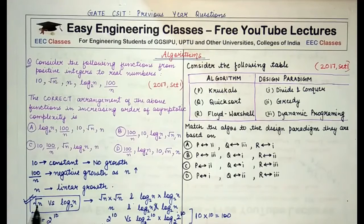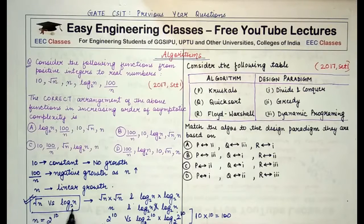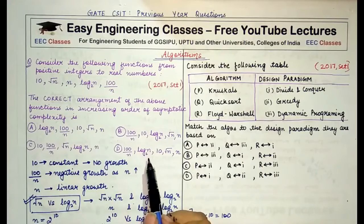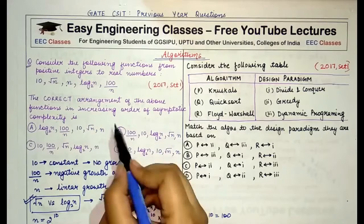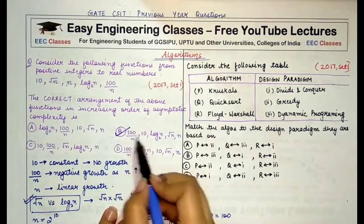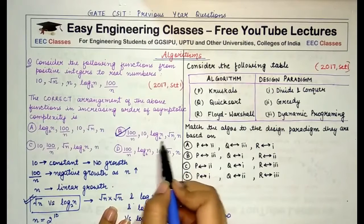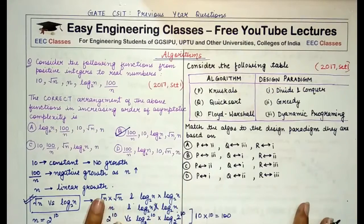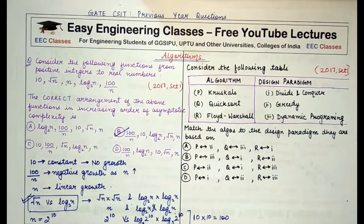The final answer is: n has the maximum growth rate, then below n there is √n, then log₂n, then the constant 10, and the least growth rate is 100/n. So the correct option is B, because in increasing order: 100/n (decreasing growth), then 10 (constant), then log n (slow growth), then √n, and finally n with linear growth.